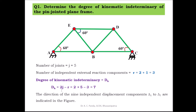Then dk = 2 × 5 − 3 = 7. The degree of kinematic indeterminacy is equal to 7. There are 7 independent displacement components, delta 1 to delta 7, indicated in the figure. At joint E there are 2 displacements (delta 1, delta 2), at D there are 2 (delta 3, delta 4), at B there are 2 (delta 6, delta 7), at C there is only 1 displacement in the horizontal direction, and at A there is no displacement due to the hinge support.